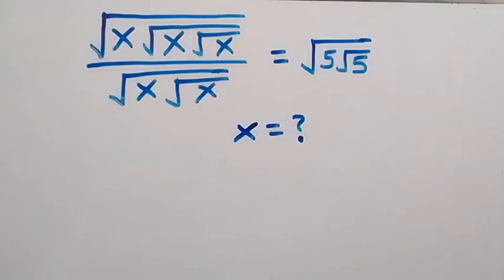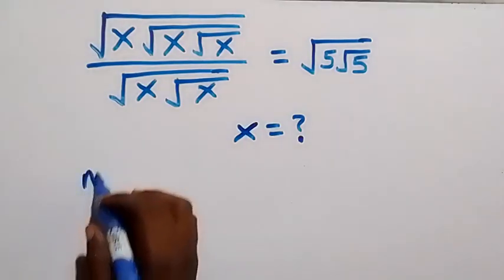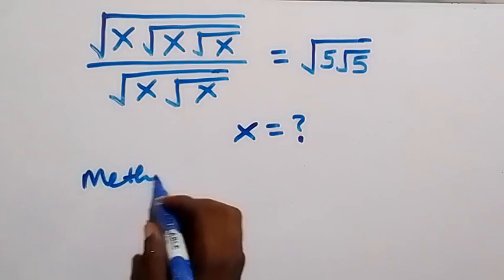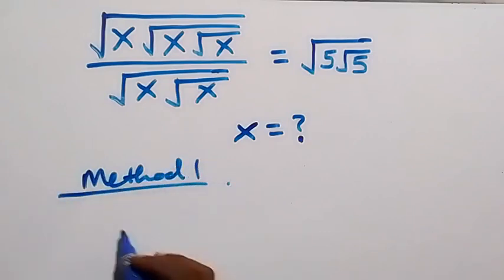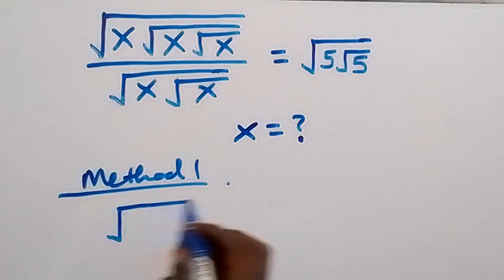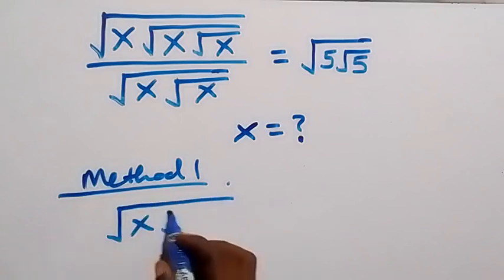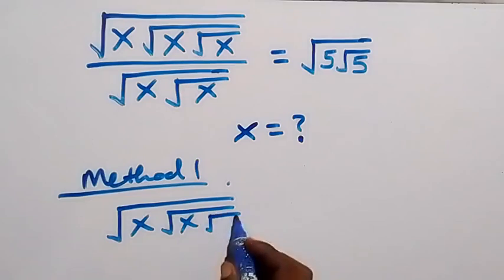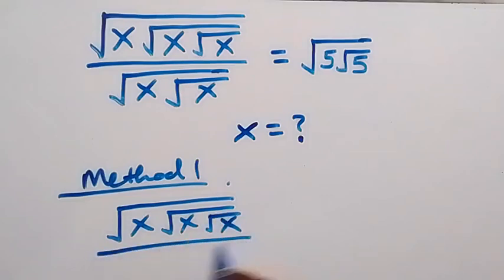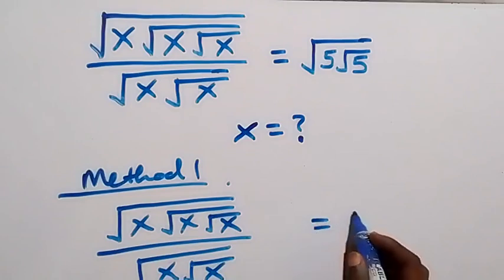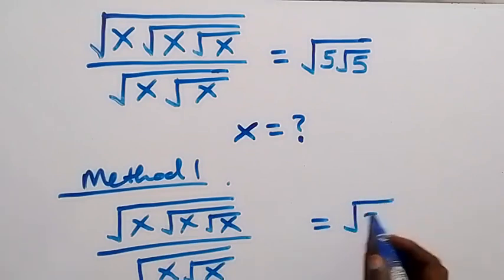Hello, you are welcome. How to solve this nice math problem involving roots — here we want to find the value of x. We have two methods of solving this. The first one: from the given expression, we have nested roots of x divided by root x, which equals root 5 times root 5.